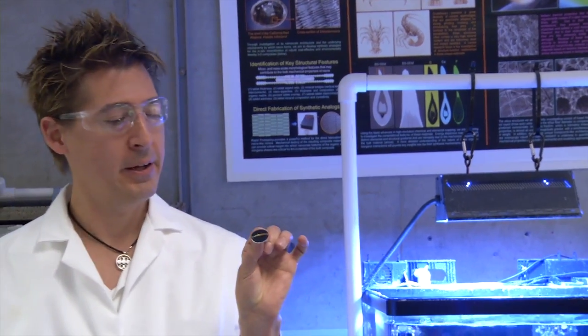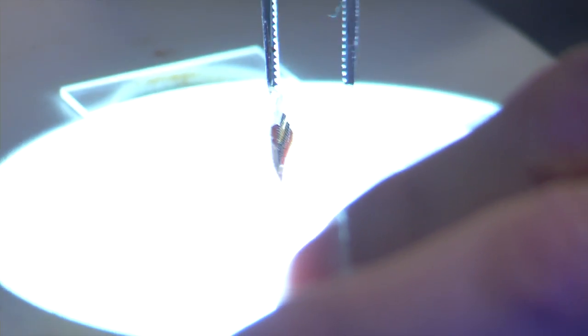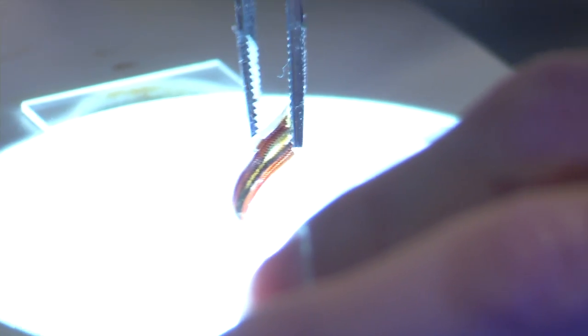It's developed a set of teeth grown on a ribbon called a radula, which it uses to scrape away the rock to get to the algae.